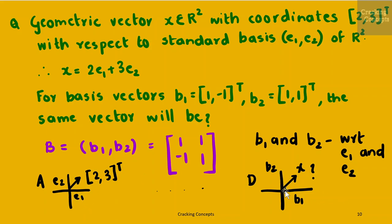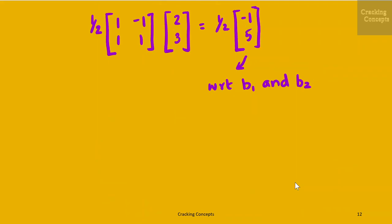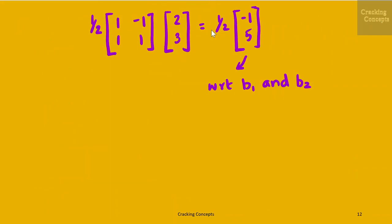We convert B into augmented matrix form and perform elementary transformations: adding the first and second rows, dividing the second row by 2, and subtracting the second row from the first row. This gives the inverse as one-half times the matrix [[1,-1],[1,1]]. Now, to find the new coordinates of the vector (2,3), we multiply this inverse by (2,3), which gives the answer as one-half times (-1, 5). This is the coordinate of vector (2,3) with respect to basis b1 and b2.